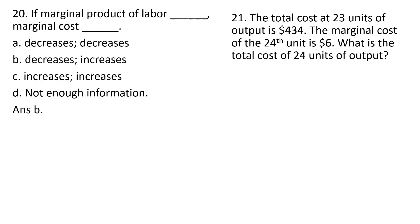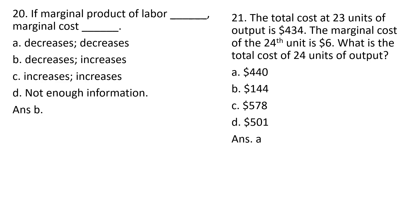Question 21. The total cost at 23 units of output is $434. The marginal cost of the 24th unit is $6. What is the total cost of 24 units of output? The correct answer is A. When we produce the 24th unit, total cost goes up by $6, so $434 plus $6 is $440. Answer choice A.